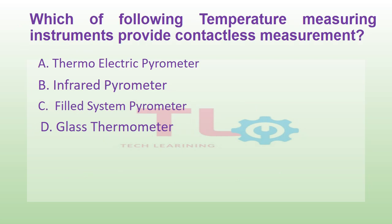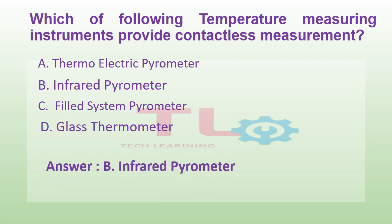Which of the following temperature measuring instruments provides contactless measurement? Option A: thermoelectric pyrometer. Option B: infrared pyrometer. Option C: field system pyrometer. Or option D: glass thermometer. And the answer is option B, infrared pyrometer.